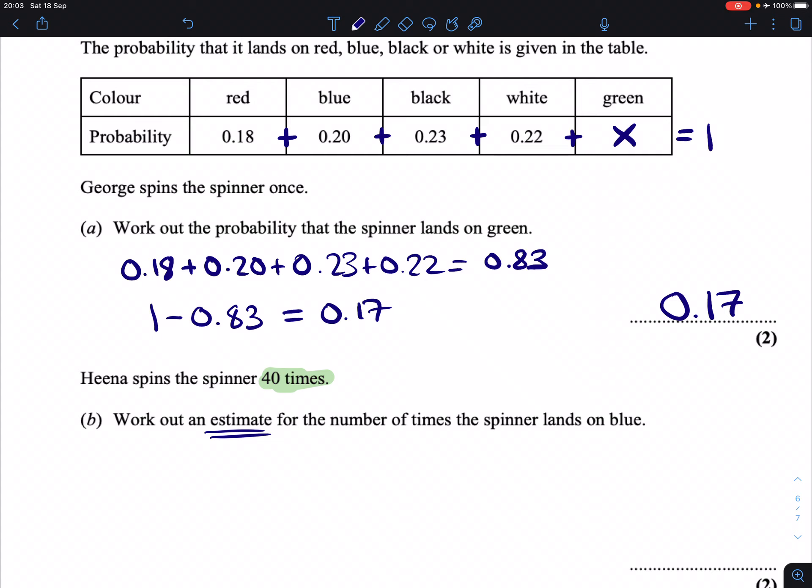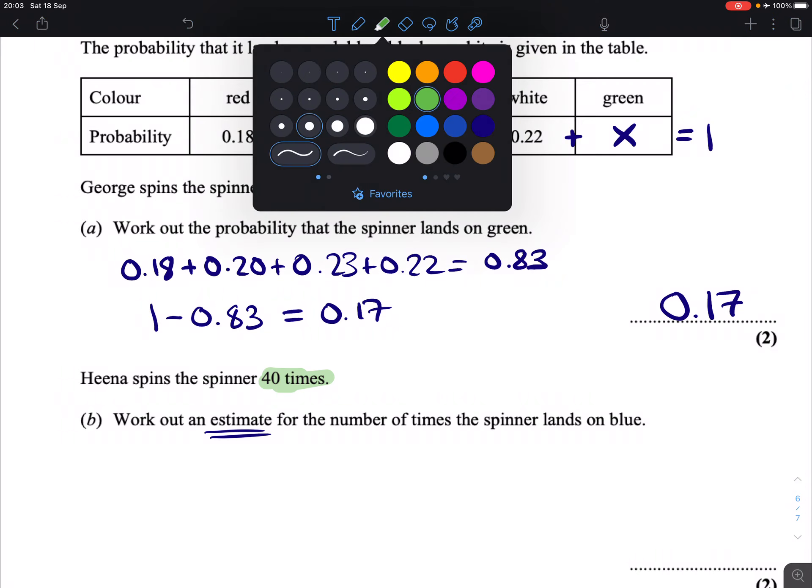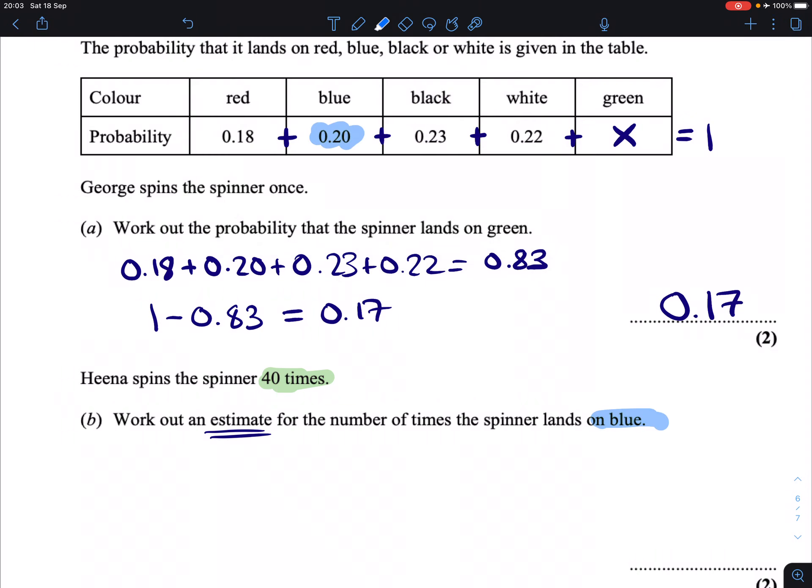Technically, every time you spin the spinner, for blue, we have a 0.2 chance. So that means for every one time you spin it, 0.2 times it will be blue. And whenever you've got this estimating probability a certain number of times, you're going to repeat the experiment over and over again. If we have 40 times or 40 spins, then you will have 40 times as many, it will be 40 times as likely, or there will be 40 times as many occurrences of us seeing blue. So what we do is we take that probability and we multiply it by 40.